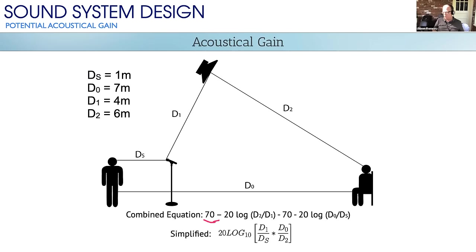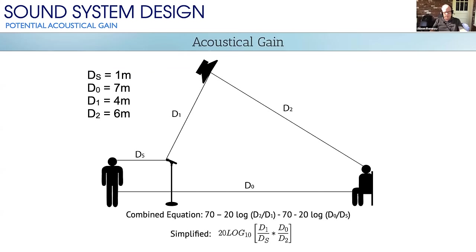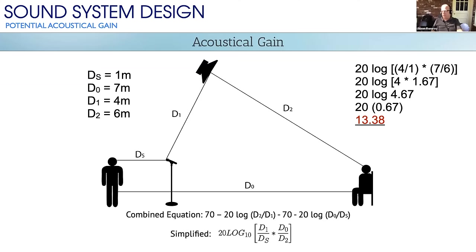Combining that math into one equation: 70 minus 20·log(D2/D1) minus [70 minus 20·log(D0/DS)]. There's also a simplified version of that equation. When you plug in the numbers — 20 times log of (4/1)·(7/6) — you get 20·log(4.67), which equals approximately 13.4 dB. That's nearly identical to the 13.5 dB calculated the other way. Notice that the value 70 — the level of the talker — is absent from the simplified equation, yet we get the same result.